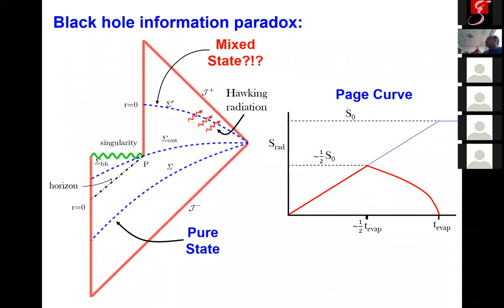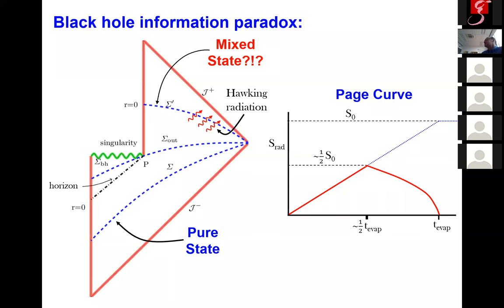Don Page pointed out and highlighted this curve as a contradiction with unitarity. He argued that in a unitary theory the entropy in the radiation should increase until about half the evaporation time, but after that there should be information leaking out of the black hole and the entropy of the radiation should be decreasing, so that it returns down to zero at the end of the process. This is really the context in which we're going to be discussing the new developments.